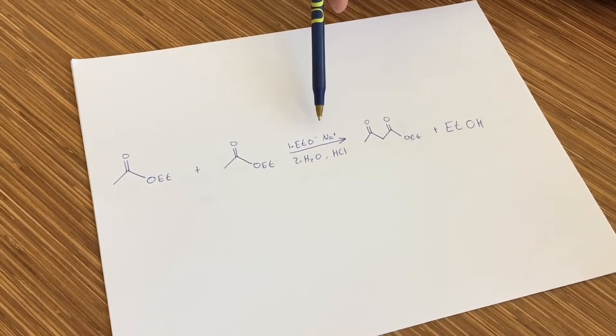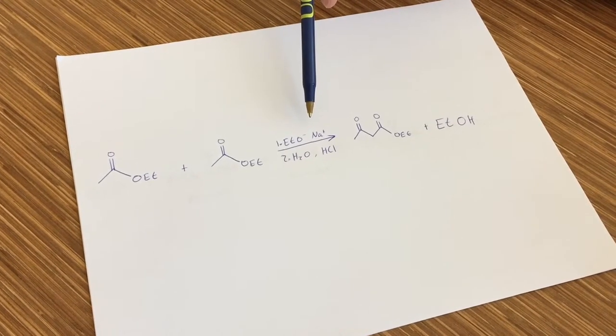In this case, we're using ethanol as the leaving group, which means the base needs to be sodium ethoxide.